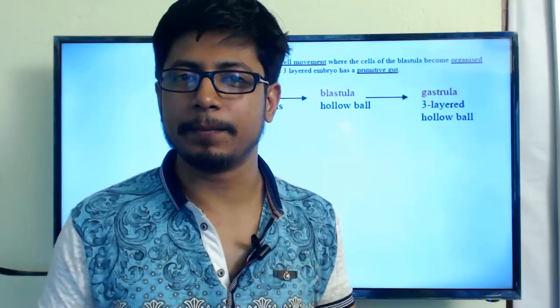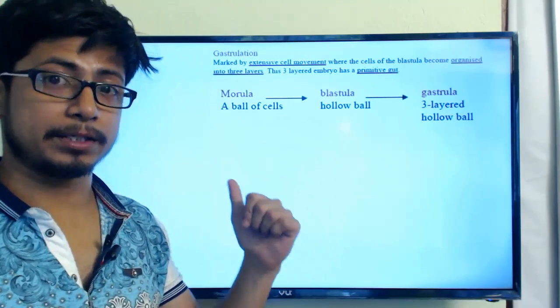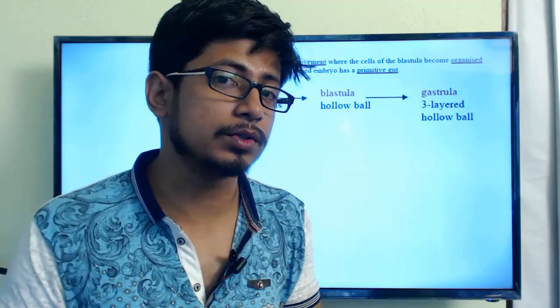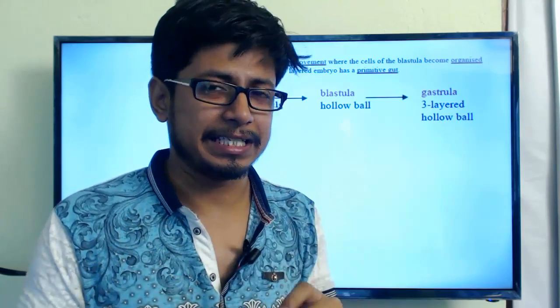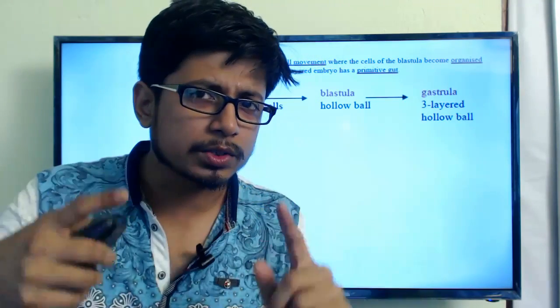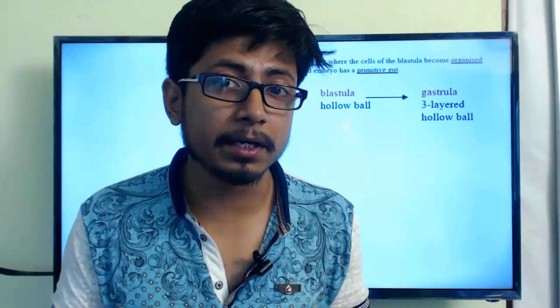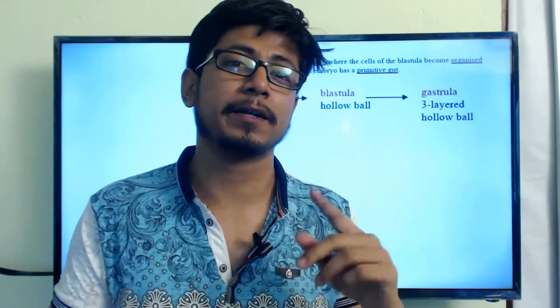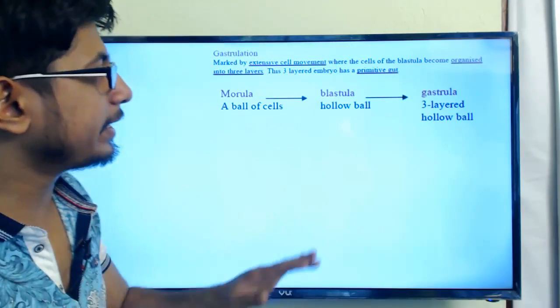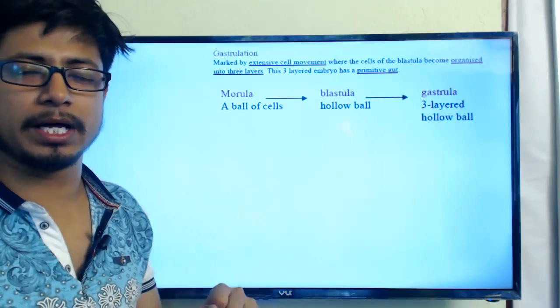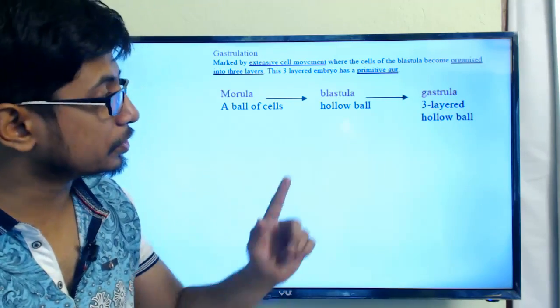In the gastrula we form three separate layers, starting from the blastula with its outer cell layer and the blastocoel inside. The blastocoel is not becoming the primitive gut — it becomes constricted and ultimately forms either the mouth or the anus, depending on the type of organism. Let's now look at the three separate layers of the gastrula and what tissues are produced from each.